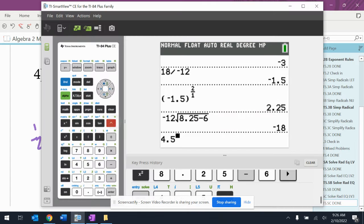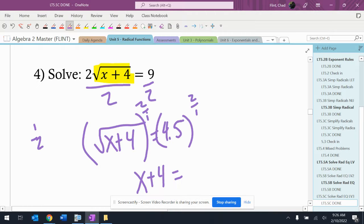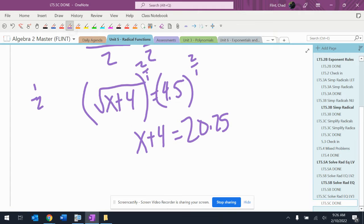4.5 to the second power is 20.25. So then I'm going to subtract 4, and I'm going to get x equals 16.25.